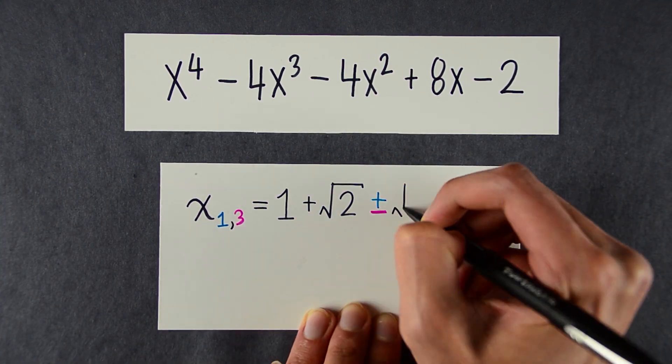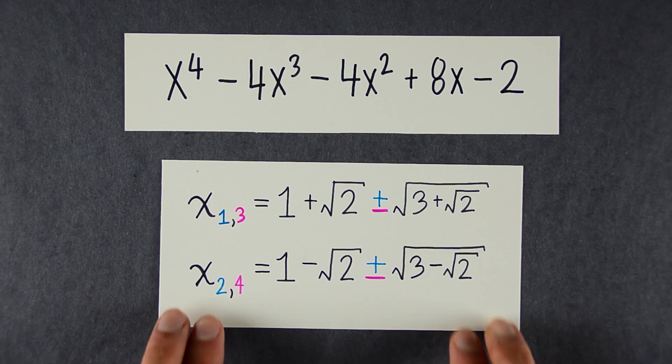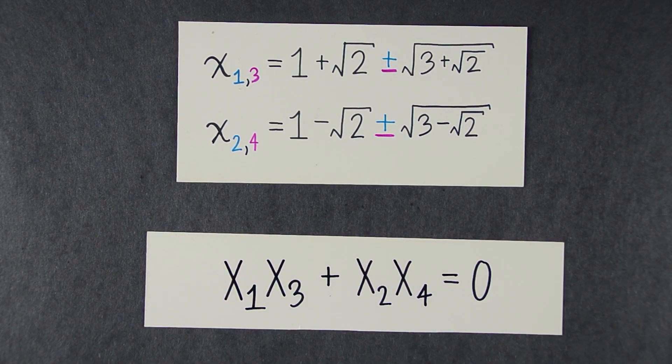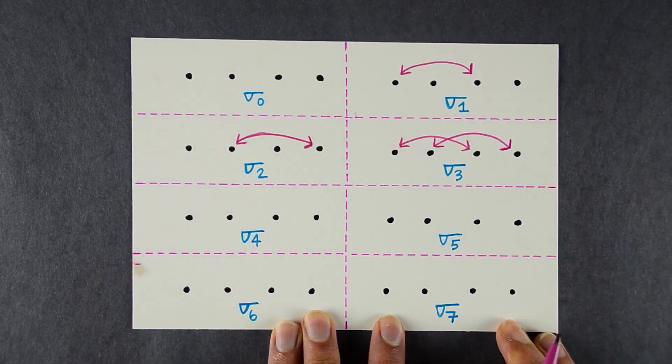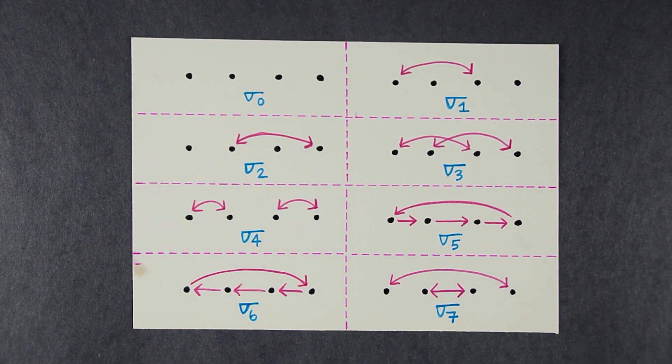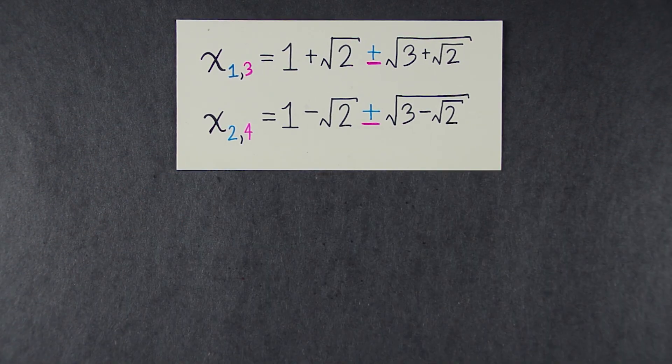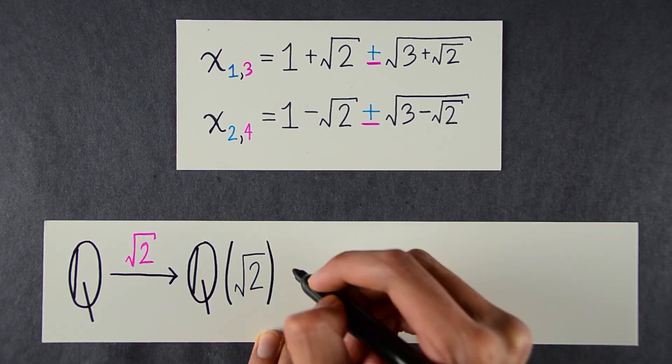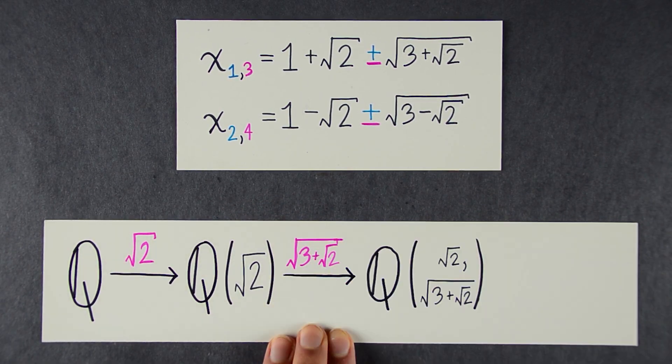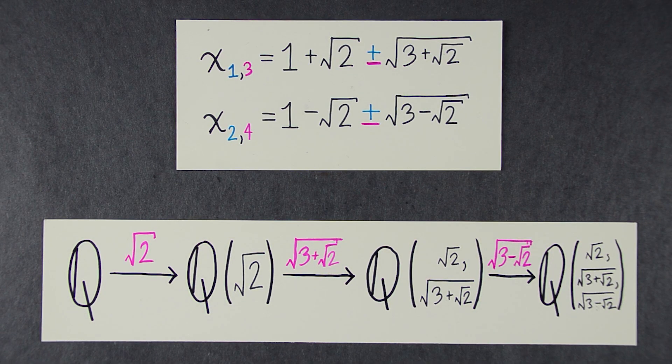To find the Galois group, we first need to list out all the roots of the polynomial, and find all the ways to swap those roots that preserve equations involving those roots. There turn out to be eight such permutations. This is the Galois group of the polynomial f. To get more insight into its structure, we use the fact that f is solvable by radicals. That is, we'll build up the field where the roots live by adjoining nth roots to the rationals one at a time. And then we'll climb the tower of fields, starting with this one.